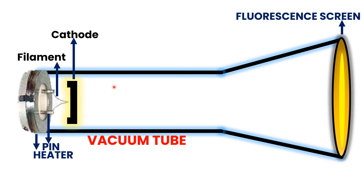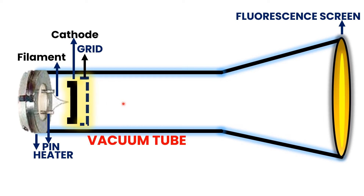The cathode ray tube also consists of three metallic anodes. Apart from the anodes, the cathode ray tube consists of a setup known as an electric grid. The role of the electric grid is very important. Since electrons produced by the cathode are not focused and cannot move with high speed toward the phosphorescent screen, the electric grid is used to speed up and focus the electrons. The three metallic anodes are: pre-accelerating anode, focusing anode, and accelerating anode.